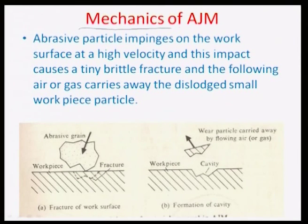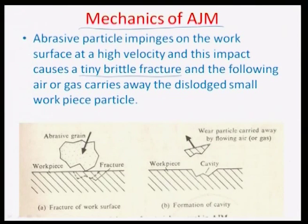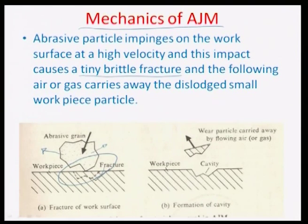The mechanics of the AJM process work by creating tiny brittle fractures on the surface impinged by abrasive particles at high velocity. The fracture happens on the surface when the grain impinges, and the velocity of the air is sufficient to dislodge the fractured material and carry it out. The new crater formed is open to further impingement and subsequent brittle fracture — essentially fracture upon fracture in succession, until a cavity is created within the workpiece.